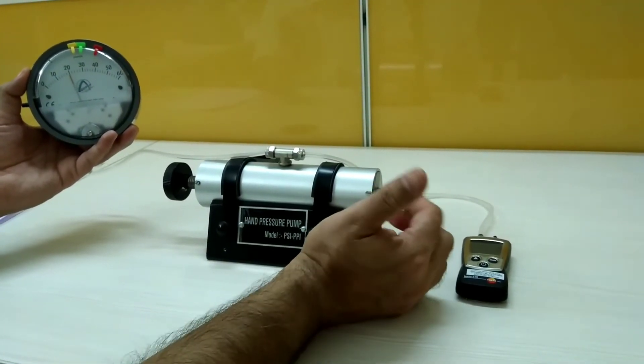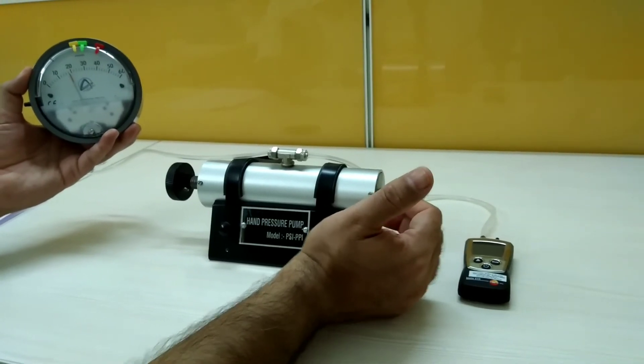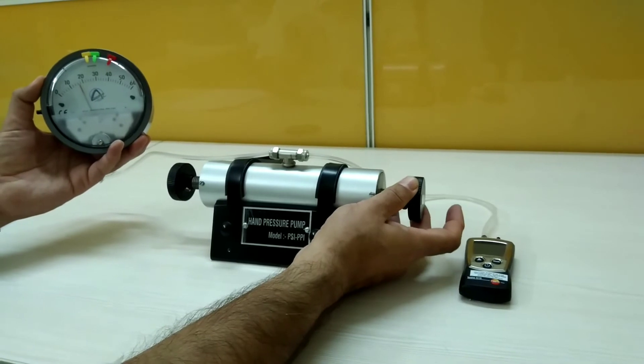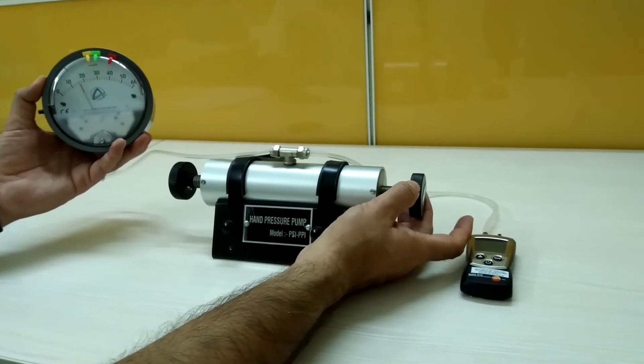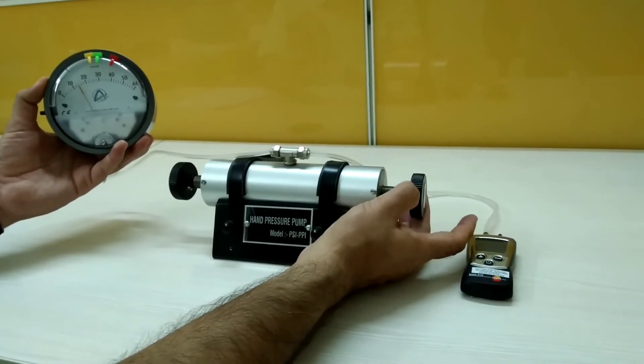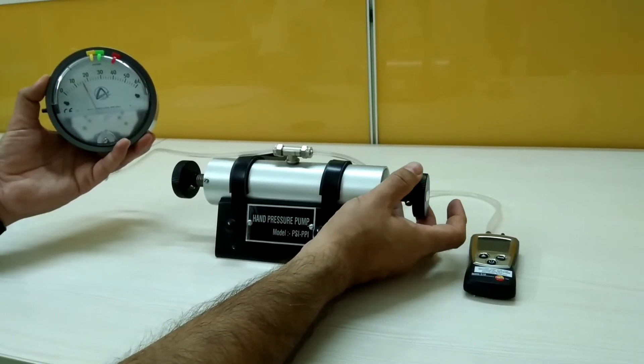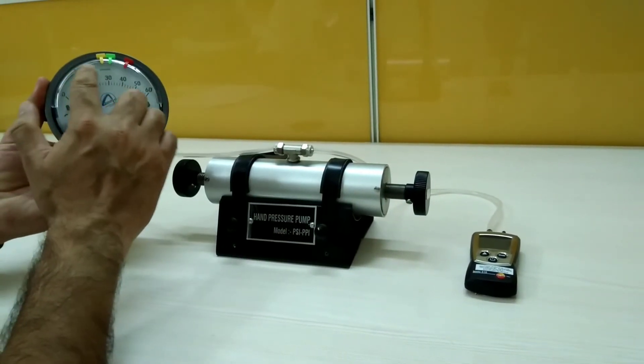If I need to do a fine tune, like I need to be accurate to one Pascal, then I can simply use this fine setting and I can increase or decrease the pressure right up to one Pascal. This particular gauge, if you see, is rated in Pascal.